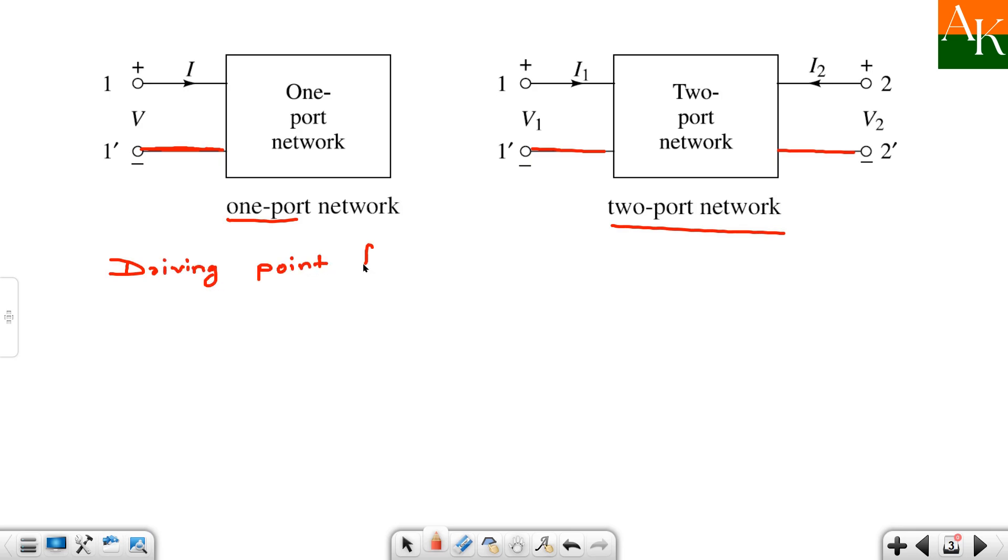Or two port network mein kaunse functions define hote hain? Toh two port network mein driving point functions bhi rehte hain, aur ek rehta hai, usko bolte hain hum log transfer functions. Transfer point function nahi hote hai, transfer function kar ke hi bola jata hai. So dekh main rake hai, two port network mein hai aapke driving point function aur transfer function.